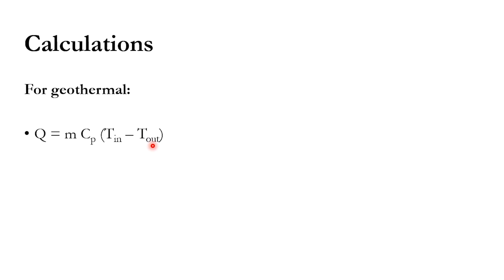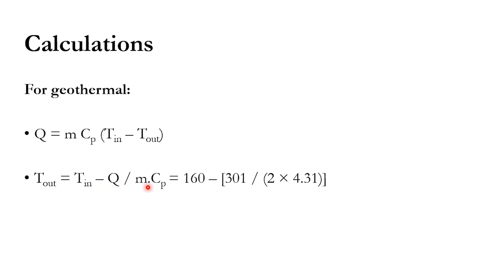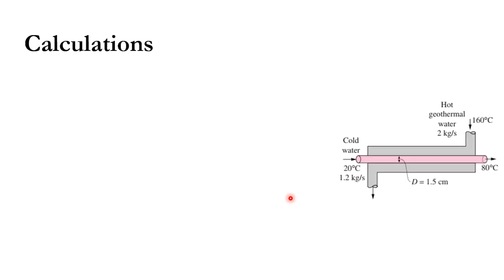For the geothermal water, Q = m·Cp·ΔT, but here it is T_in − T_out. Since the heat gained by the cold water equals the heat lost by the geothermal water, and we know Q, we calculate T_out = T_in − Q/(m·Cp). Substituting values gives T_out = 125°C.